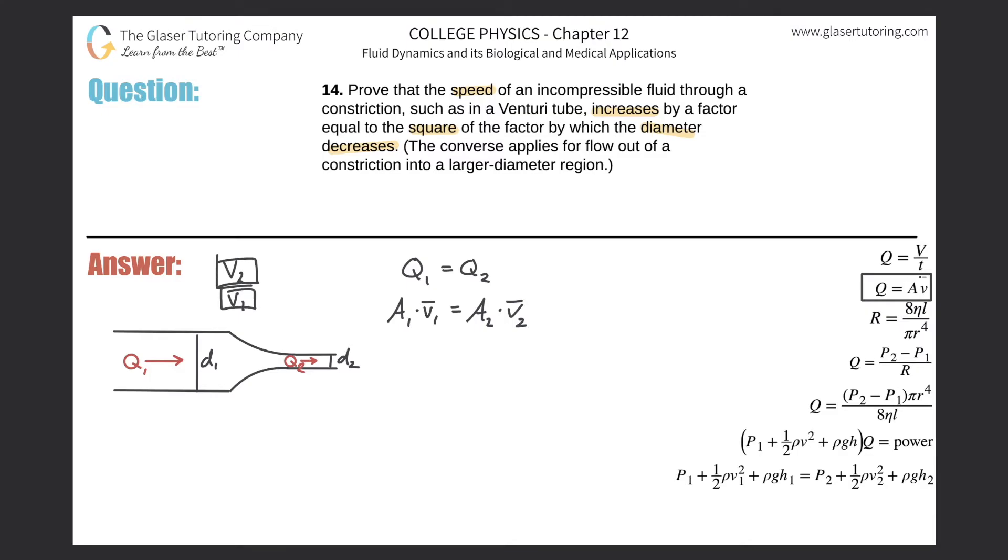Because we just basically prove that as the area goes down, the velocity goes up. So I know 2 will be higher than 1, and I know that this ratio will represent a factor increase. This is just a ratio, factor, ratio, tomato, tomato.